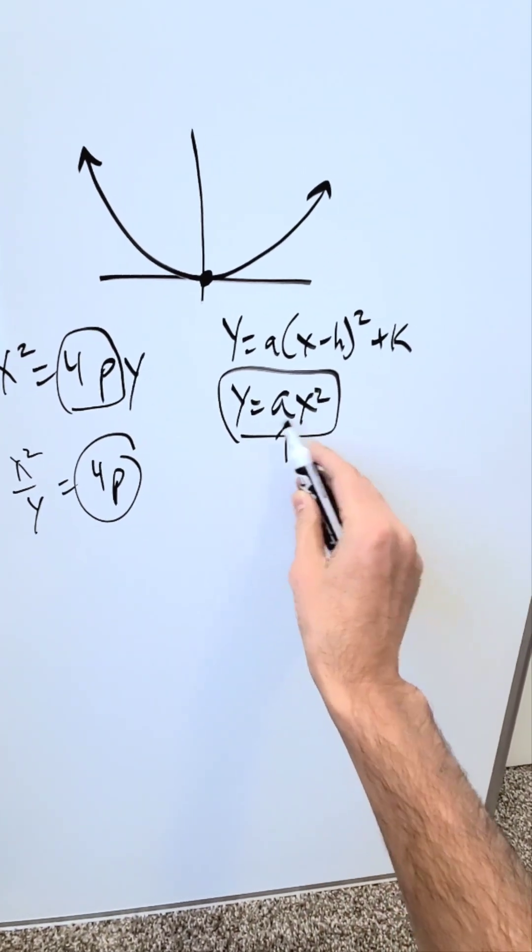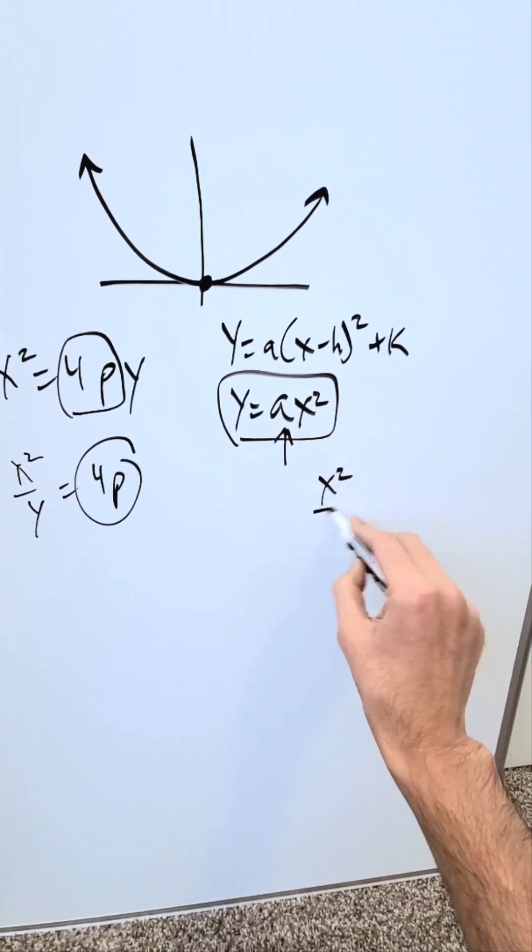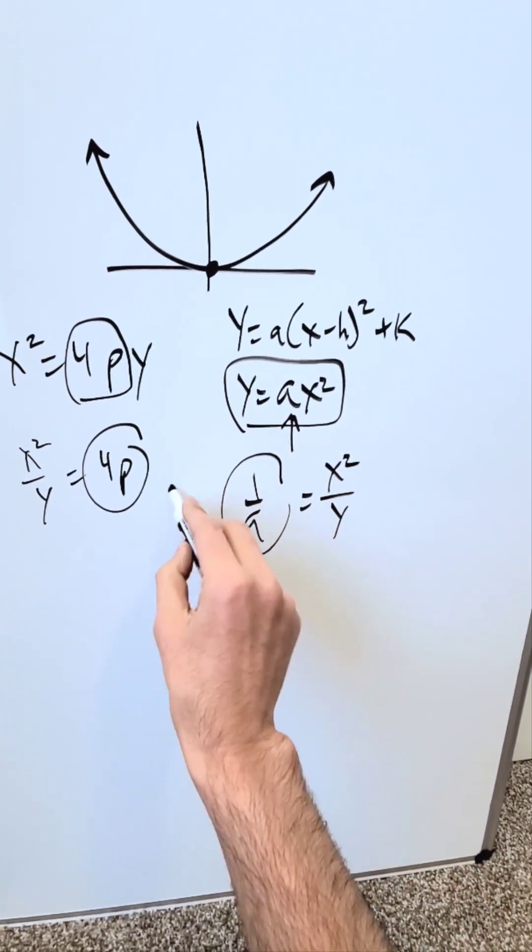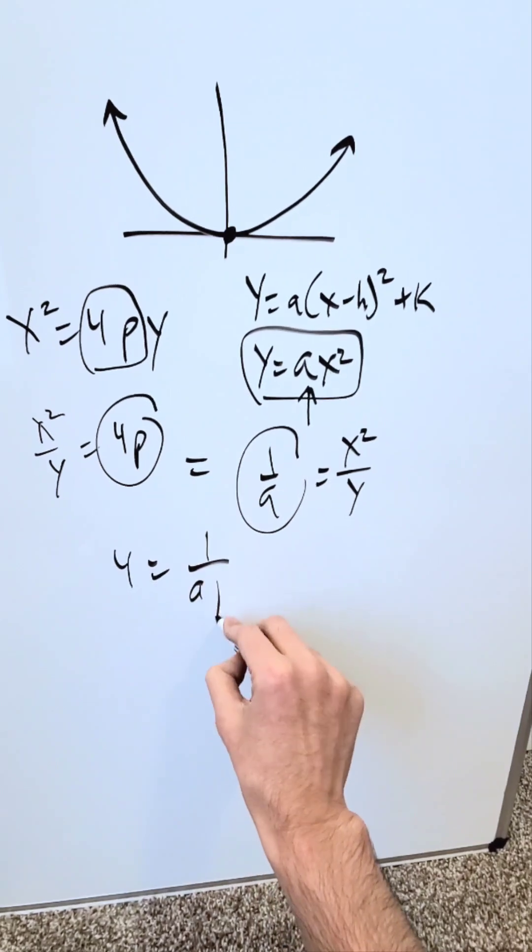Here, do the same. Push the y on this side and the a on the other side. I'll have x squared over y equals 1 over a. Now, relate these to each other. They're equal to each other. You'll say 4p equals 1 over a.